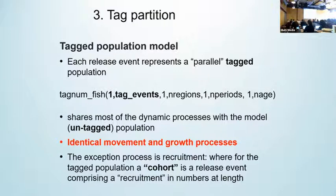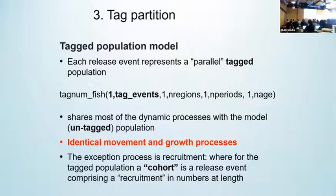Moving to the tag partition. Simply, the tag partition runs in parallel to the untagged population and generally shares most of the same population dynamics. The tag structure is the same as the untagged, apart from the fact that there is an added dimension for the release event at the base level of that data structure.